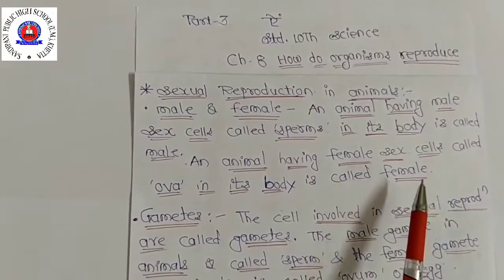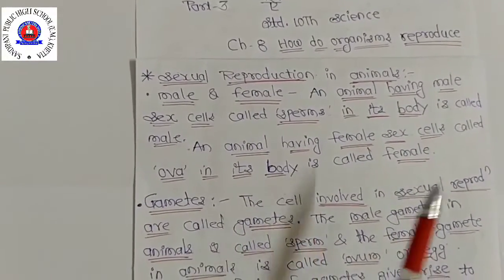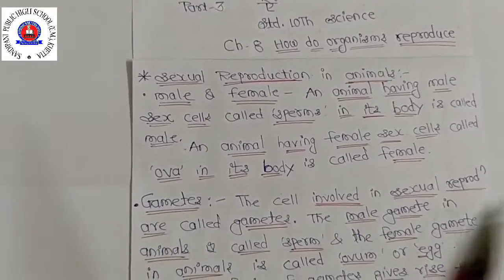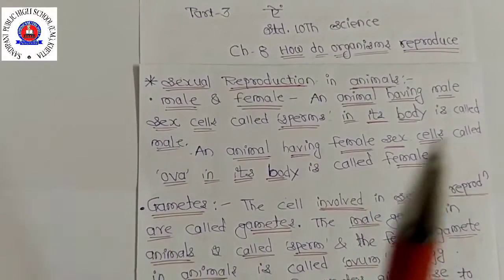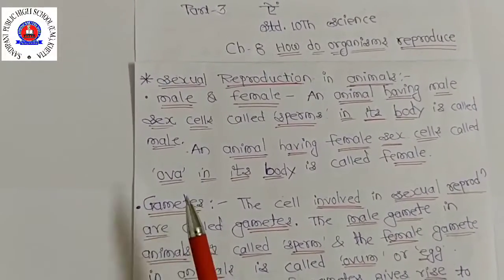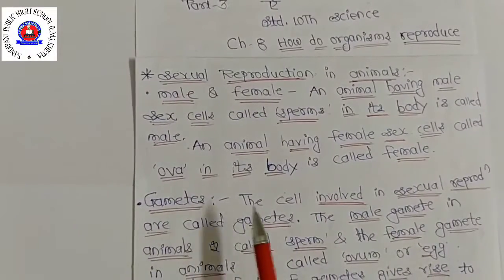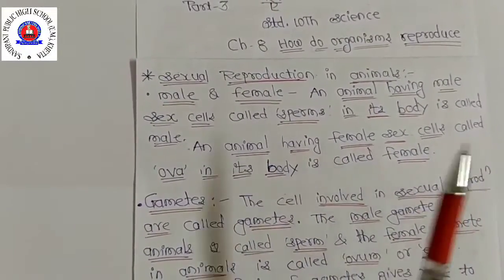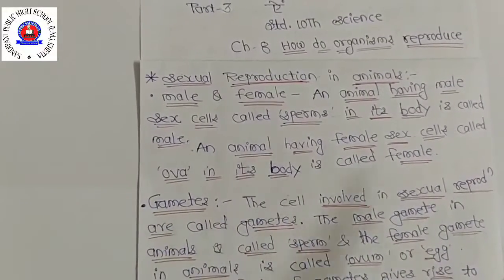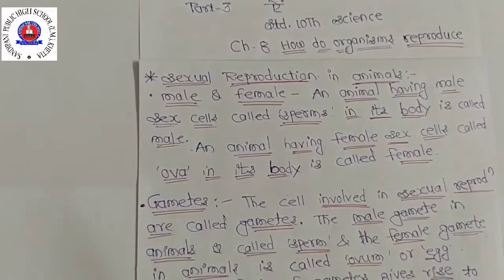Sexual reproduction takes place by the combination of special reproductive cells called sex cells. These sex cells are known by another name: gametes. So the cells involved in sexual reproduction are called gametes. In other words, gametes are sexual reproductive cells.